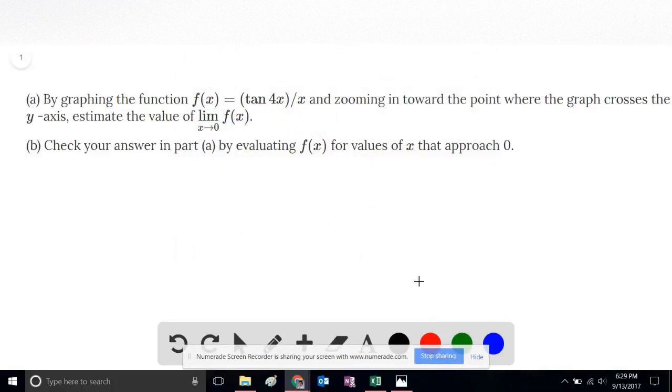This is problem number 46 of the Stewart Calculus 8th edition section 2.2. Part A: By graphing the function f(x) equals tangent of 4x divided by x, and zooming in toward the point where the graph crosses the y-axis, estimate the value of the limit as x approaches 0 of this function f.